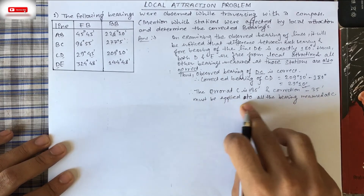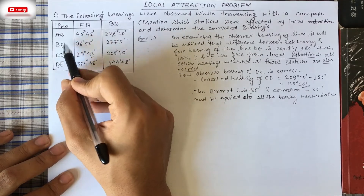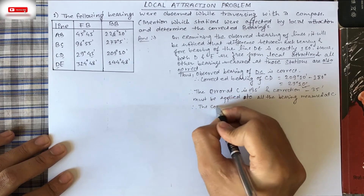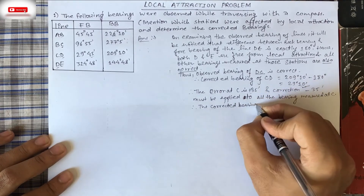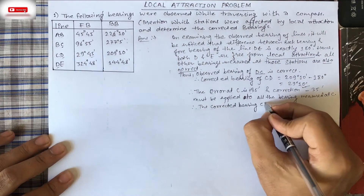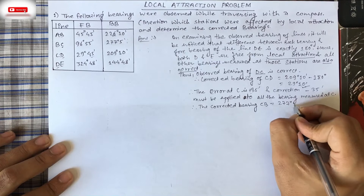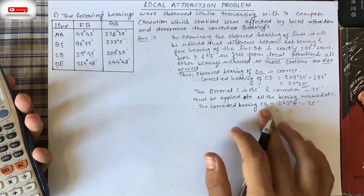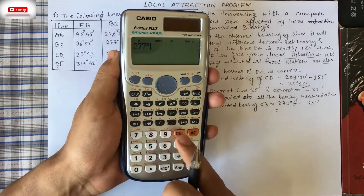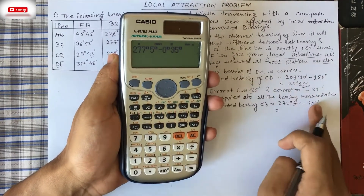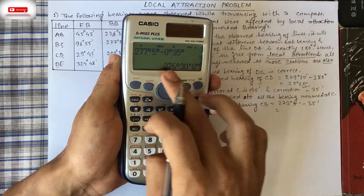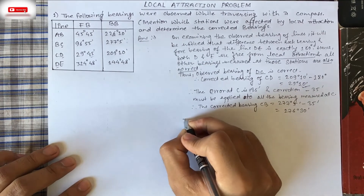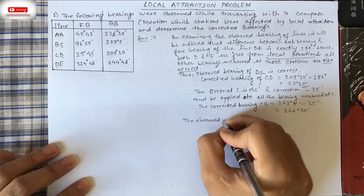Now we apply the correction to all bearings measured at C. For bearing CB, the observed value is 277°5'. Applying minus 35 minutes: 277°5' minus 0°35' gives us the corrected bearing of CB as 276°30'. So the corrected CB is 276°30'.